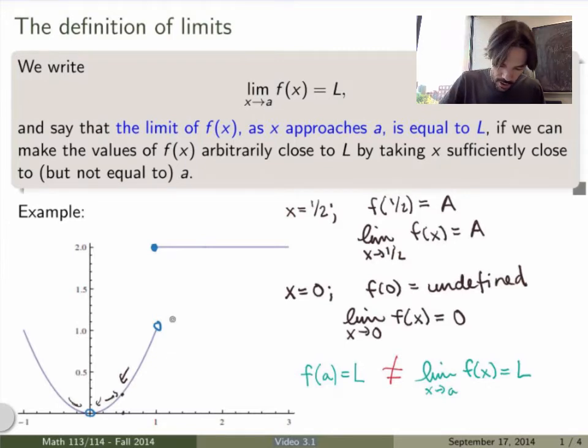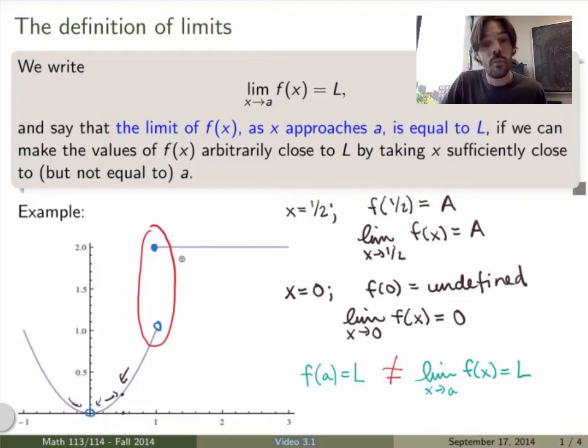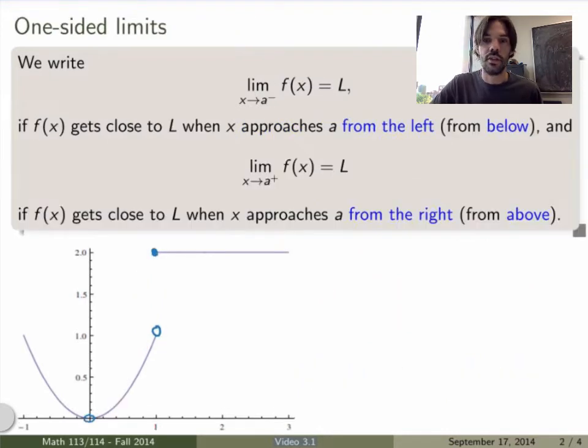But what happens now at x equals 1? This case is quite interesting. Because the function is well defined, the value of the function is just 2, now the limit is a little more subtle, because if I approach the point x equals 1 from the left, I get a different limit than if I approach it from the right. So I have to define now something more precise, which is called one-sided limits. So I'll do that in the next slide.